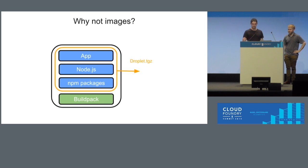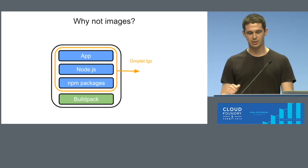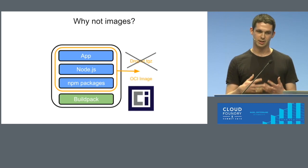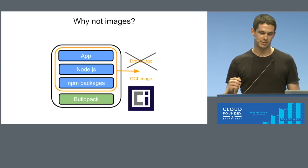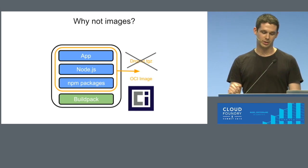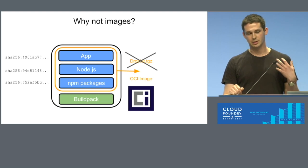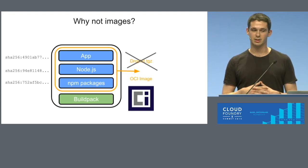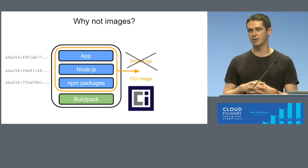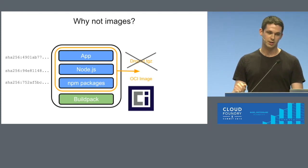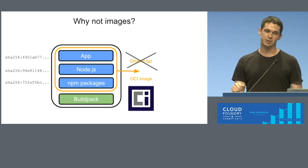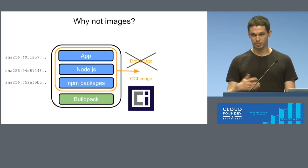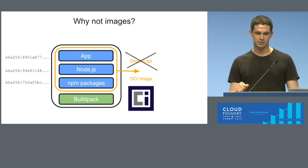So let's take a look at some of these changes a little bit more in depth. We've gotten rid of the droplet we were creating during staging before. We're using OCI images now. Right off the bat, we get a layer digest for each of the different layers, which is contractually associated with the contents of each layer. So we can easily audit our applications and make sure things haven't changed. Not only that, OCI images are very portable — we can run these images in a lot of different places.